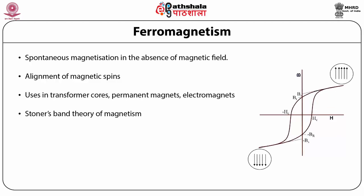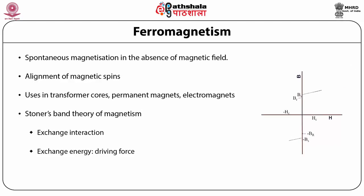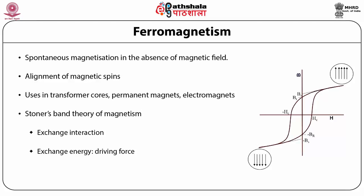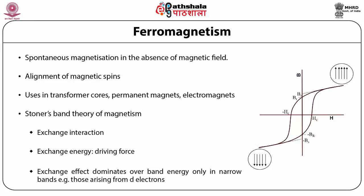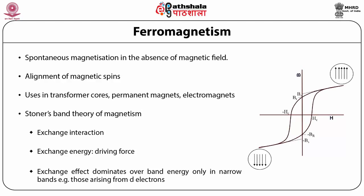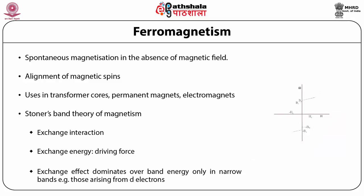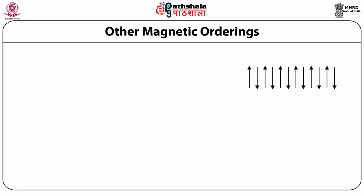The Stoner band theory explains ferromagnetism and describes three types of exchange interaction: first, the exchange interaction itself; second, exchange energy, which is basically the driving force; and third, the exchange effect, which dominates over the band energy only in narrow bands, such as those arising from D electrons.